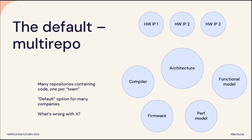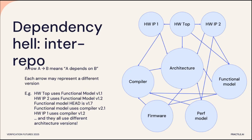So what's wrong with that? Well, let's think about dependency hell. Each arrow on the graph on the right represents a dependency from A to B. It's already a complicated web of pointers inside repositories to other repositories. The worst bit comes when you realize that each arrow can represent a different version being depended upon. For example, you could have the hardware top level depending on a different version of the functional model from hardware IP 2, and you only figure that out when you bring the two things together. The functional model might have raced ahead to version 1.7, breaking things relied upon by both hardware IPs. The compiler that the functional model uses is version 2.1, but hardware IP 1 is still using version 1.2. And they all refer to different versions of the architecture — you don't discover it until you try and plug them together.